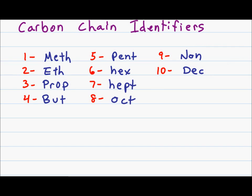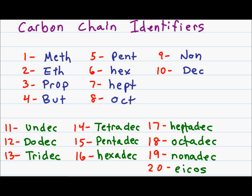The numbers are as follows. One is meth, two is eth, three prop, four but, five pent. From six through ten, these numbers should look somewhat familiar. Six is hex, seven hept, eight oct, nine non, and ten dec.